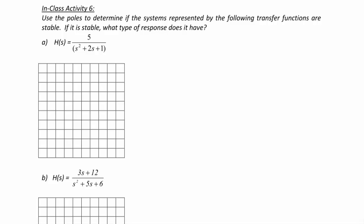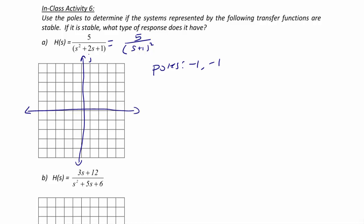In-Class Activity 6: use the poles to determine if the following second-order systems are stable, and if so, what type of response. First, H(s) = 5/(s² + 2s + 1) = 5/(s+1)². We have two poles at −1, a repeated real root. Since both poles are in the open left half plane, the system is stable, and with repeated real roots the response is critically damped.